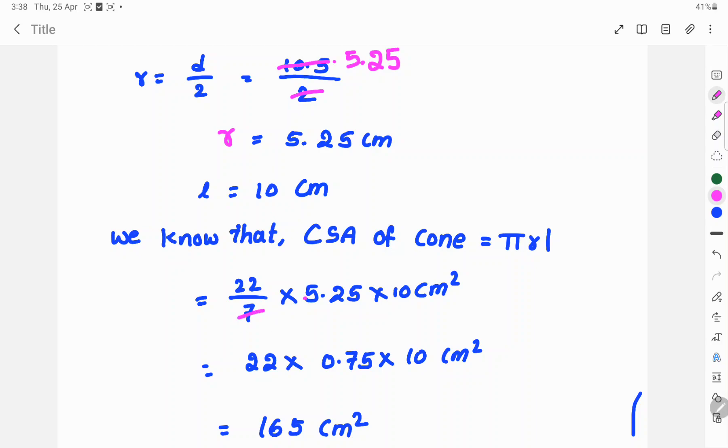22, here 7 cancels with 5.25 giving 0.75, times 10 cm squared.